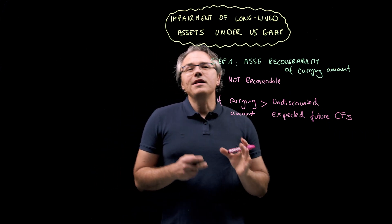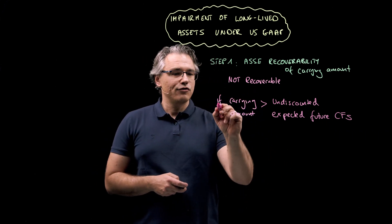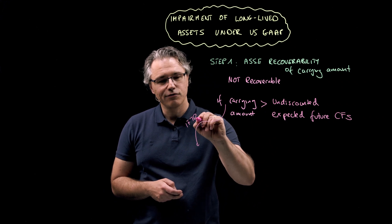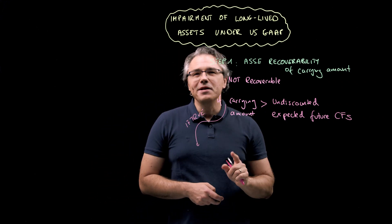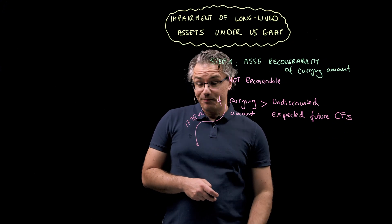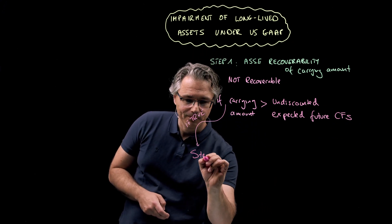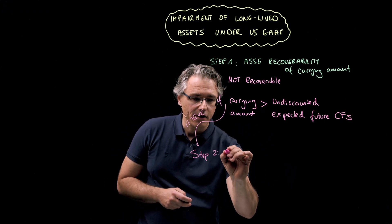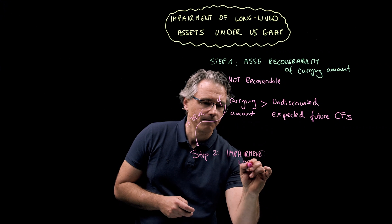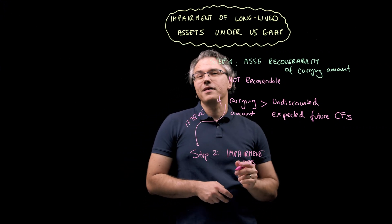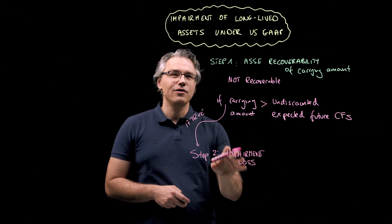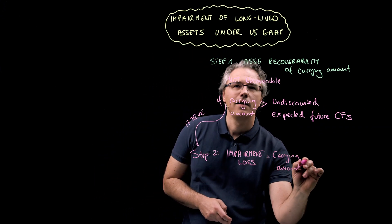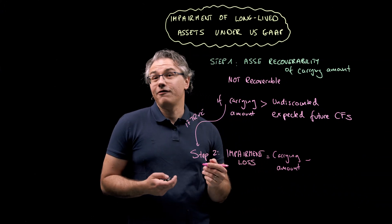It is only if this is true that we proceed to step two, which involves computing the actual impairment loss. Now, to make things somewhat confusing, this loss is the difference between the carrying amount and the asset's fair value.